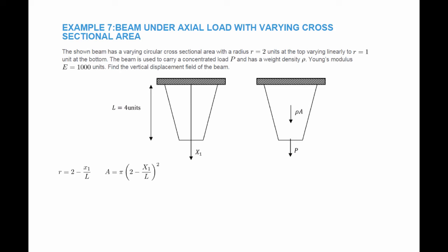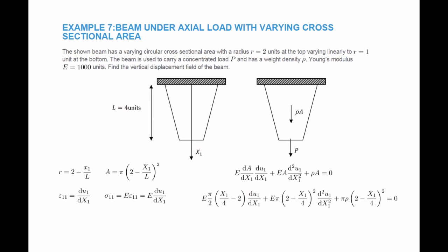The area is equal to pi multiplied by r squared. Epsilon 11 is equal to du1/dx1. Sigma 11 is equal to E multiplied by epsilon 11. The differential equation of equilibrium that applies is the general one, since the cross-sectional area changes with position. Substituting A into the equation, we reach a more complex differential equation that we solve for u1. Two boundary conditions are used: first, the displacement at the top is zero; second, at the bottom, the stress equals the force p divided by the cross-sectional area, giving a boundary condition in terms of du1/dx1.